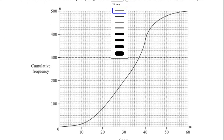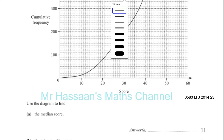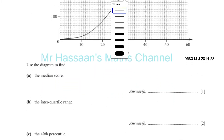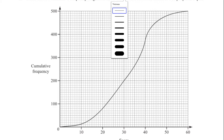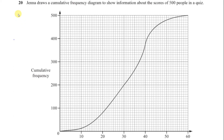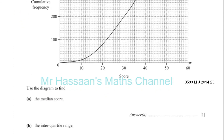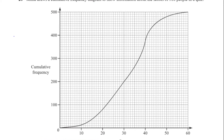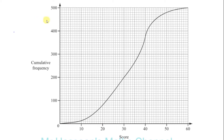The first question says use the diagram to find the median score. The median score is the middle score — the score that's in the middle when all of the scores are arranged in order of size. Here we're basically going to find an estimate of the median. There were 500 scores altogether, so the median score is going to be the one right in the middle, and they are in order once placed in a cumulative frequency curve.